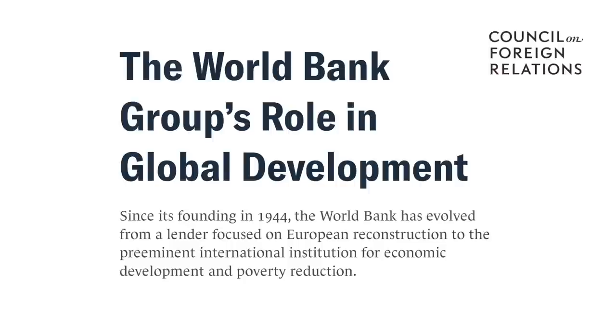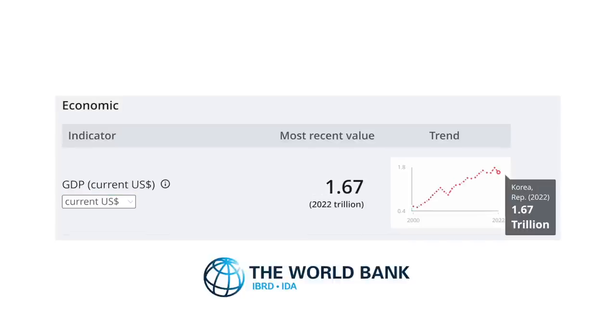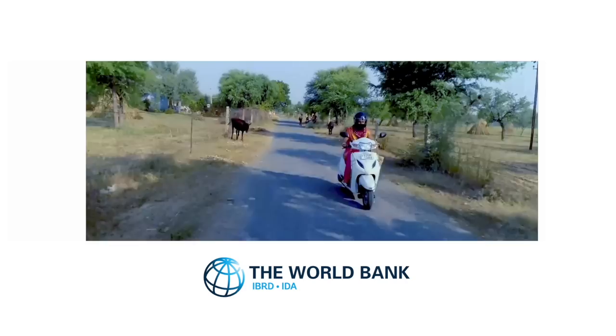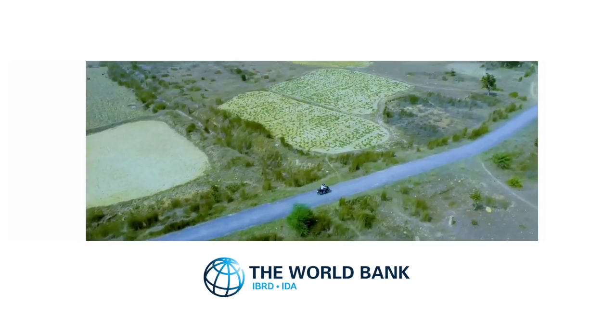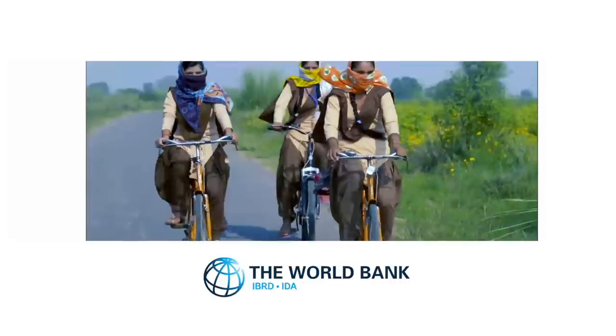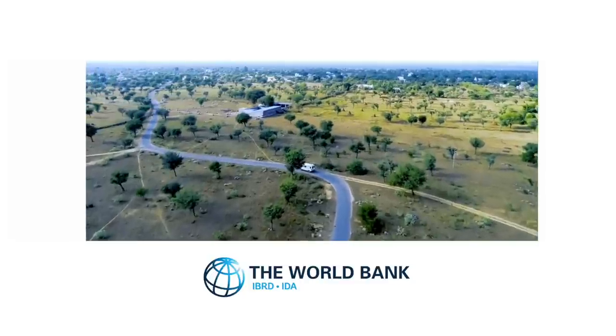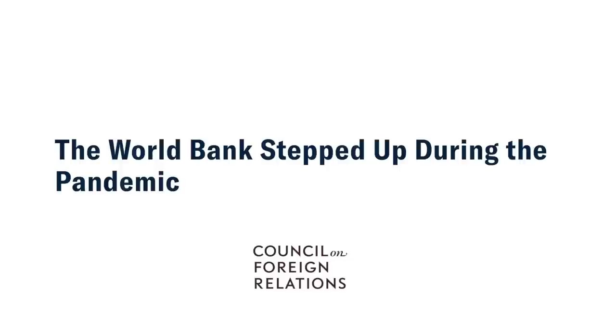Proponents will claim that many good things have happened that wouldn't have happened otherwise. Examples of success include helping economies like Bosnia and South Korea. Another example would be tens of thousands of roads built in rural India, helping communities have access to food, water, and local economic growth — thanks to billions of dollars of investment from the World Bank. Some people, however, question the true intention of these efforts, wondering who they actually benefit.